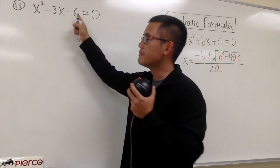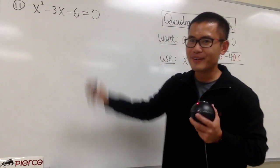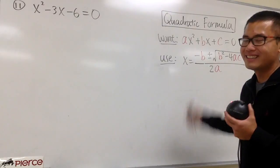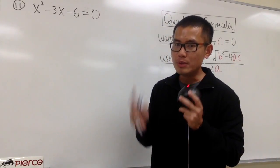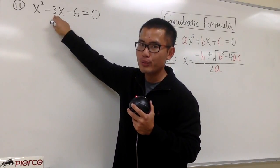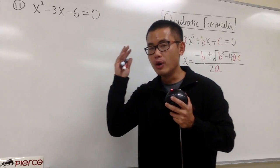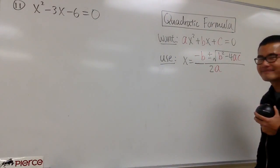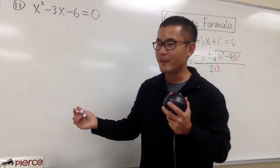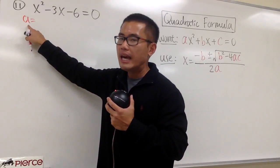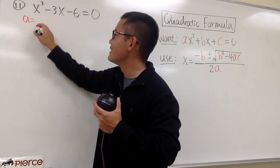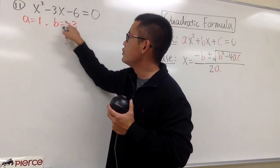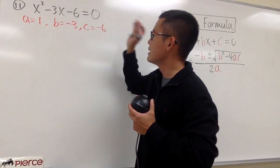For this one, we have x squared minus 3x minus 6 is equal to 0. This is not factorable. So whenever you're trying to solve a quadratic equation that's not factorable, we can either complete the square or use the quadratic formula. To complete the square, we'd have to do one half of the b value, which is negative 3 — that's a fraction, we don't like it too well. So in this case, let's utilize the quadratic formula. This is in standard form already. a is 1, b is negative 3, and c is negative 6.